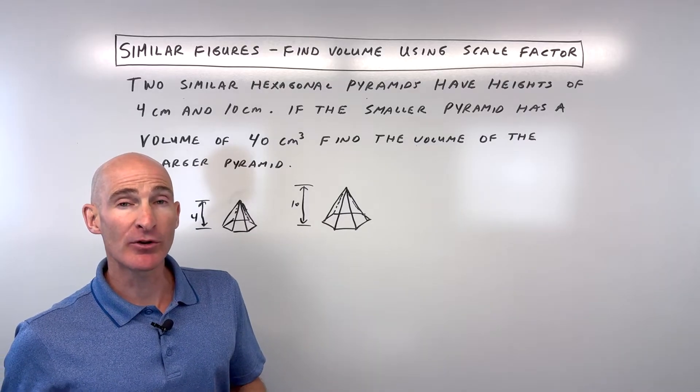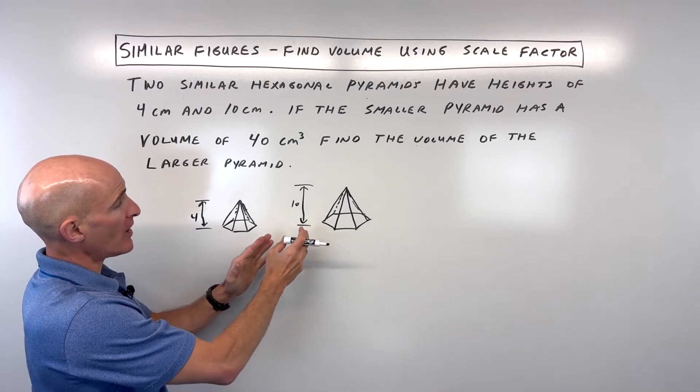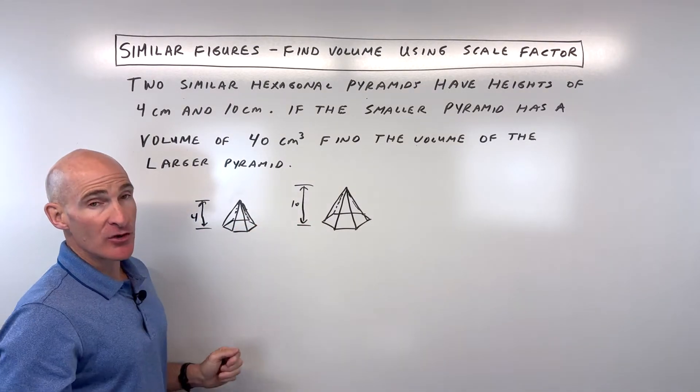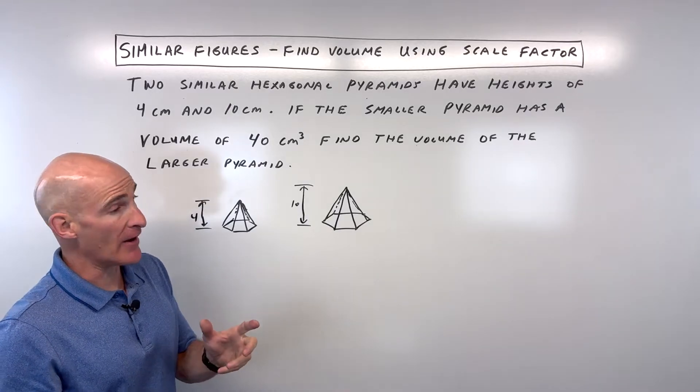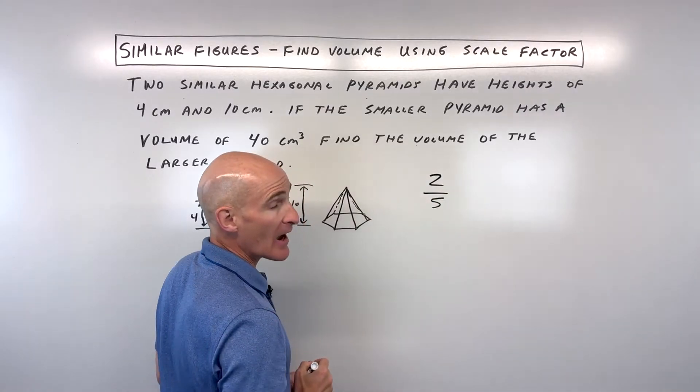The two pyramids are similar, which means we look at the ratio of the heights. We've got 4 to 10, which you could reduce down to 2 to 5. So basically, the ratio of these two pyramids is 2 to 5.